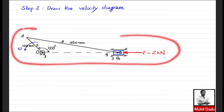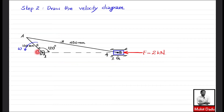Identifying the key points: O is the pivot about which the crank rotates (zero velocity), A is the end of the crank, AB is the connecting rod with B at the slider center, and G is a point on the ground. O and G are the zero velocity points and are marked as such on the velocity diagram.